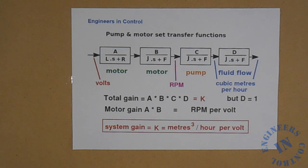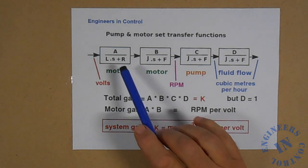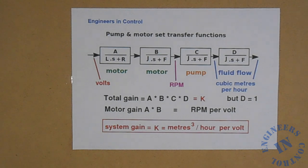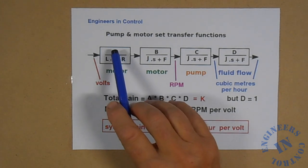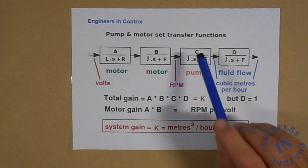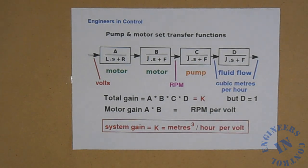Now let us look at the numerator. In fact it is simply a multiplied by b multiplied by c multiplied by d. A times b is just the gain of the motor. The input is in volts and the output is in revs per minute. C is the gain of the pump and converts revs per minute into cubic meters per hour of flow, which is the standard usually used in process plants. And gain d has the same input as the output in cubic meters per hour, and so the gain of d is just one.